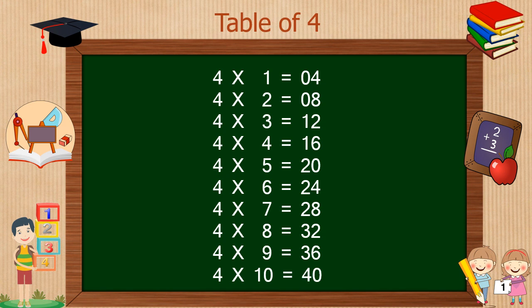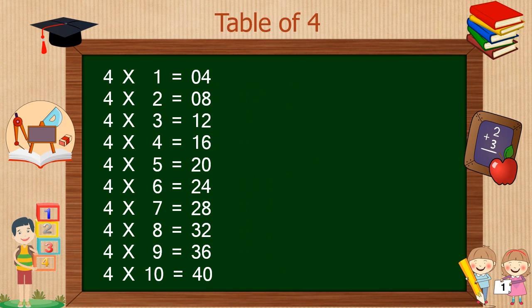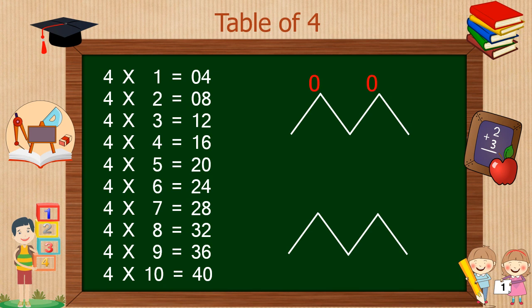Now see a very interesting trick for the table of 4 — using this trick you can write this table in just a minute. Draw this pattern two times. In the first pattern write 0 on top and 1 on bottom. In the second pattern write 2 on top and 3 on bottom. Then write down the table of 2 to the right side of each digit: 2, 4, 6, 8, 10.